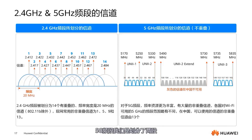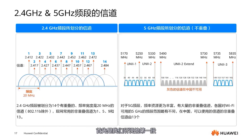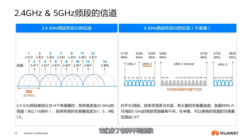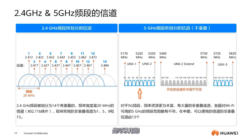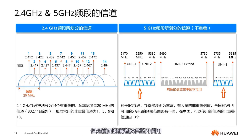Now let's look at the 5 GHz band. The 5 GHz band is divided into two segments in China, though internationally three segments are available. UNII refers to unlicensed national infrastructure. In China, channels 100 to 144 are not available and strictly prohibited. The first usable segment ranges from channels 36 to 64, and the second from channels 149 to 165. Channels 36 to 64 are for indoor use only, while starting from channel 149, both indoor and outdoor use are permitted.